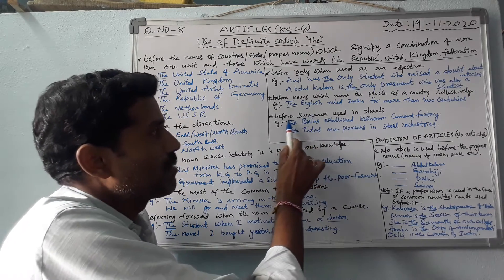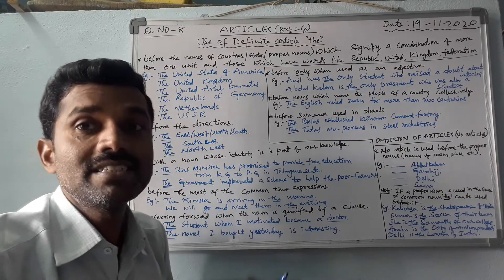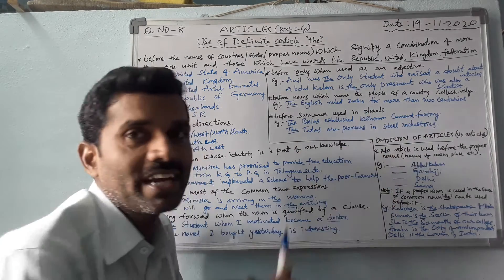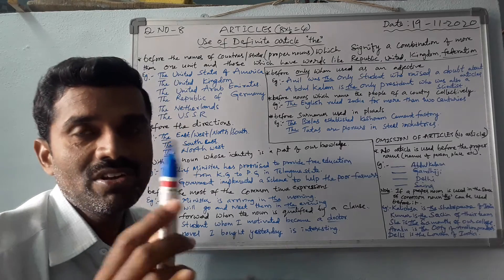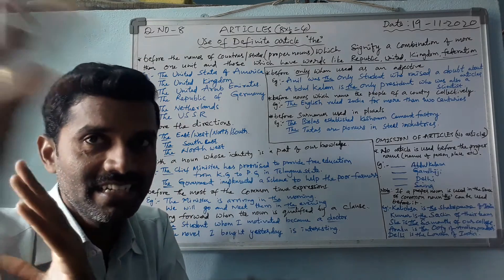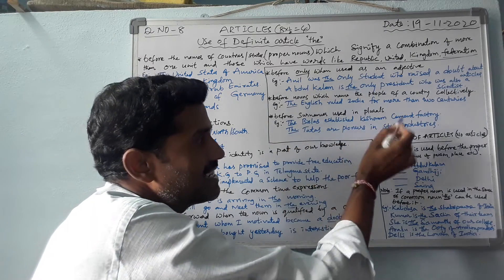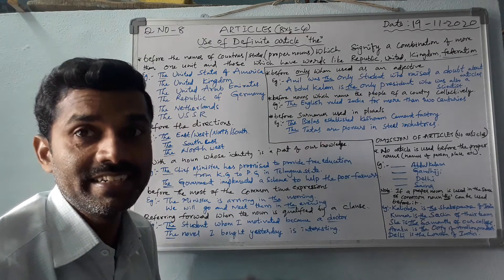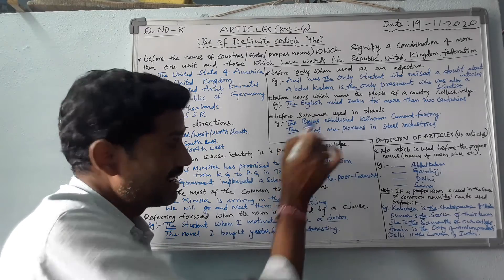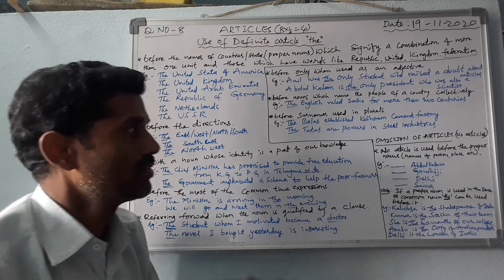Next, before surnames used in plural, 'the' is used. For example: 'The Birlas established Keshoram cement factory' — the Birlas is the name of a famous business dynasty. 'The Tatas are pioneers in steel industries.' So before these surnames, the definite article 'the' is used.